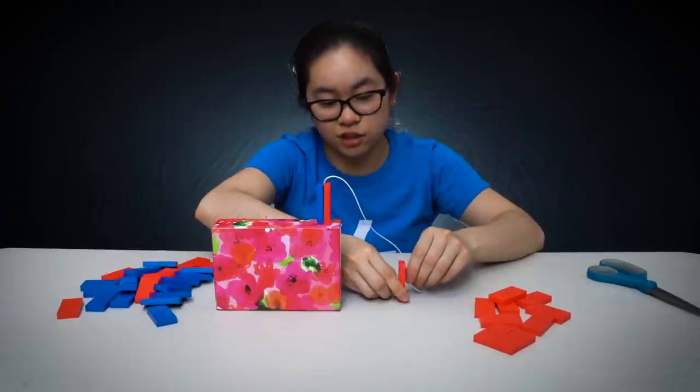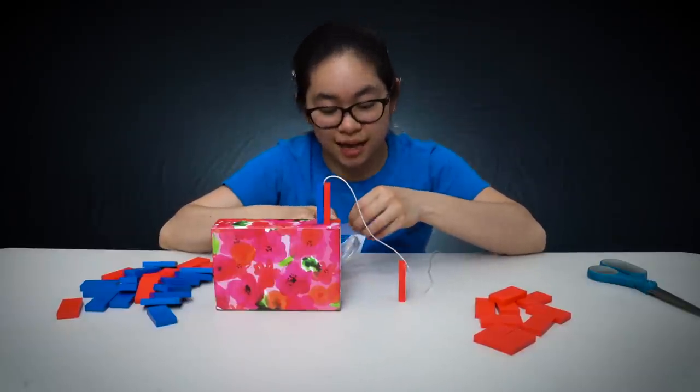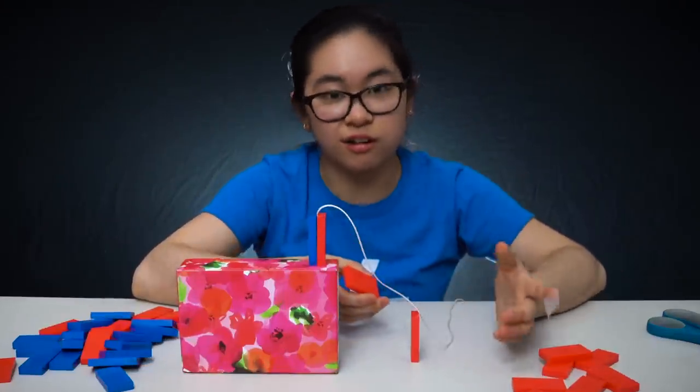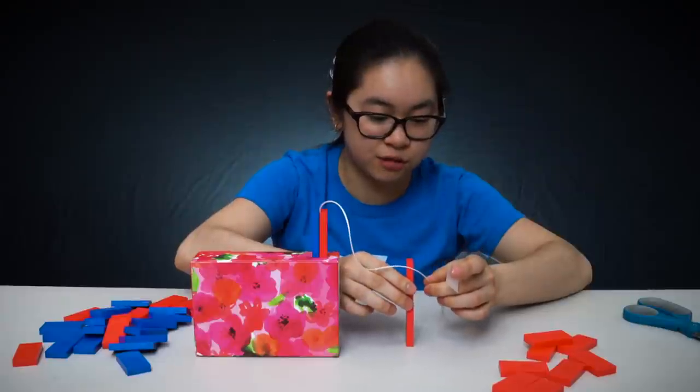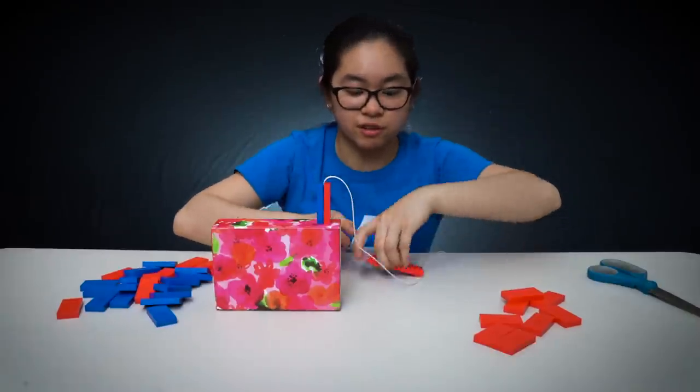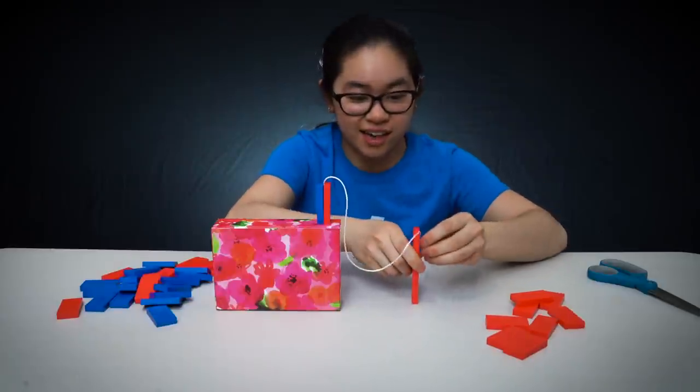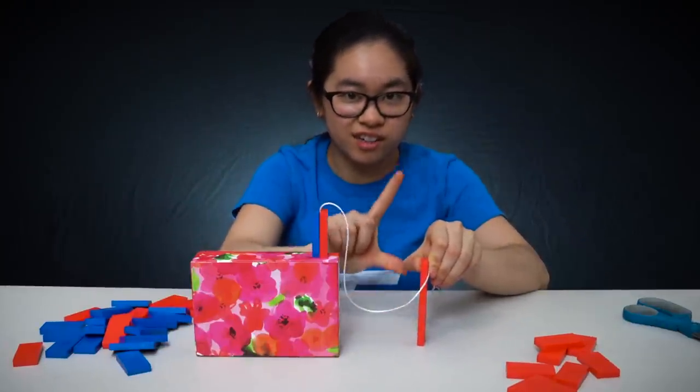Definitely do some tests before you actually put this in your setup to make sure it works. A trick you can also do is tape two dominoes together, or you could use a field starter or a larger domino, and then connect that to the string. By having a taller domino, you're going to have a much larger rotation when it falls.